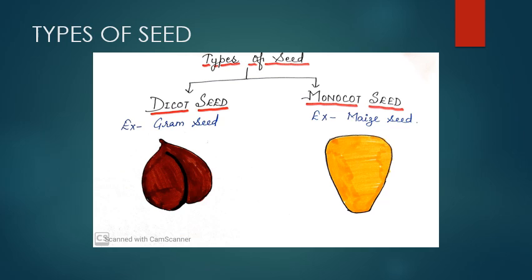But these cotyledons can be either two in number or one in number. And on the basis of their numbers in the seed, the seeds can be divided into two types, dicot seed and monocot seed. Dicot seed as the name indicates, di which means two and cot refers to cotyledons. So the seeds which have two cotyledons or two seed leaves, they are called dicot seed. And monocot seed, mono means single and cot refers to cotyledon. So the seeds which are having single cotyledon are called monocot seed.